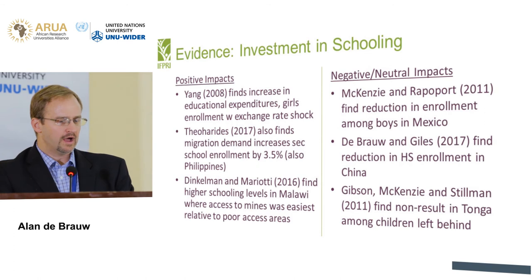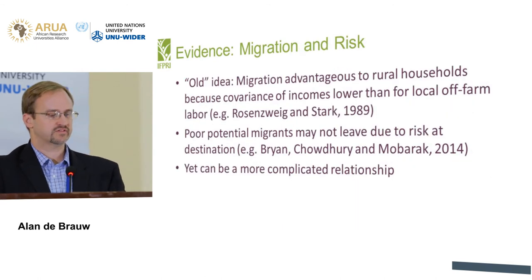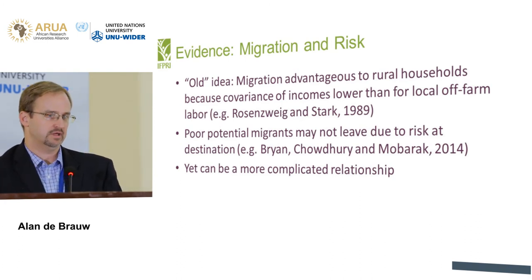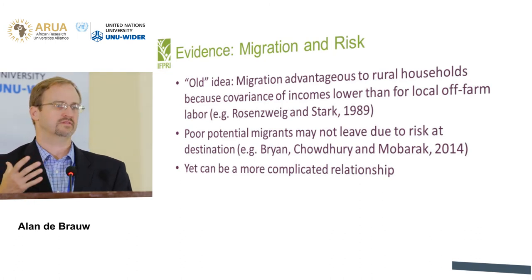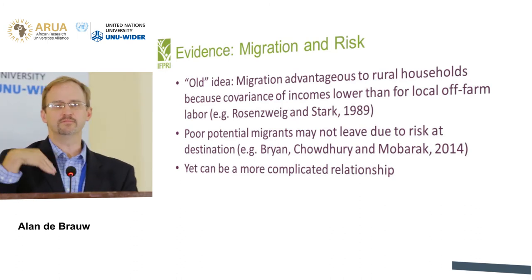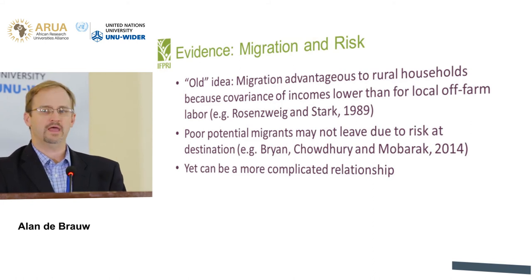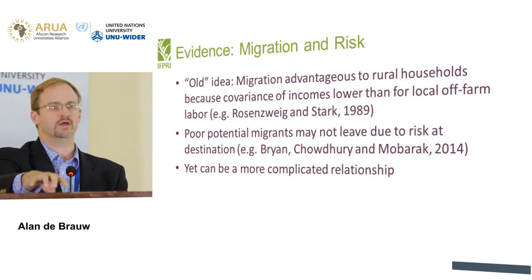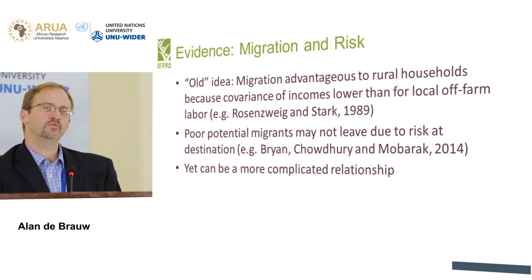There's a longstanding idea in the literature that migration is advantageous to rural households because of income covariance. A nice experiment by Bryan, Chowdhury, and Mobarak argues that poor potential migrants may not leave due to risk at the destination — they don't migrate during the hunger season in northwest Bangladesh. When given money for a bus ticket through a randomized intervention, those villages that received bus ticket money are still seasonally migrating at higher rates than the control villages, even in subsequent years.